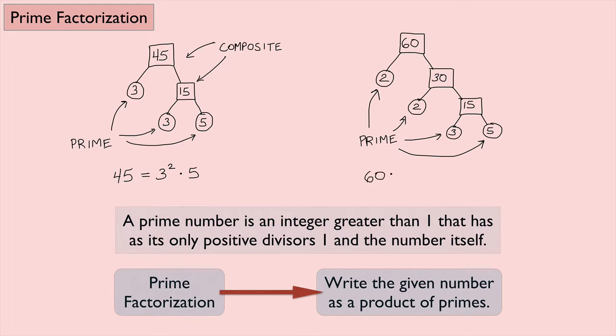60 can be rewritten as 2 times 2 times 3 times 5 or 2 squared times 3 times 5. This is the prime factorization of 60.